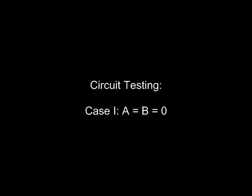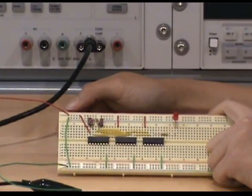The first case of circuit testing, both inputs are 0. Previously, we said the default of the switch status indicates digital 0. So for the first case, we really need to do nothing, and the LED is off.